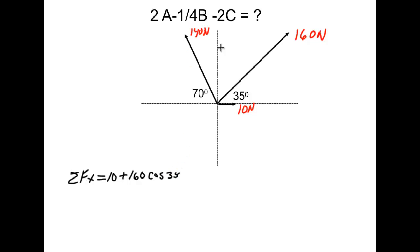We do plus 160 times the cosine of 35. Again, the reason we're doing the cosine is because if we look at the components of this vector here, it would be like this and like this. So it has a positive x and a positive y. So we'll go ahead and just delete those.